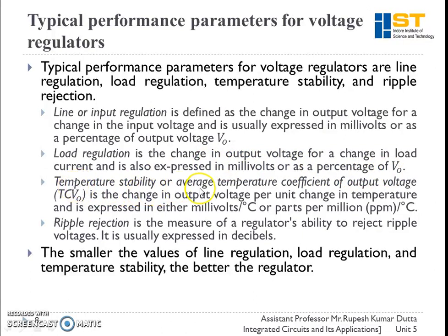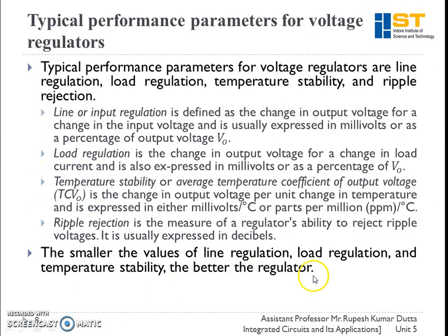Temperature stability, also known as the average temperature coefficient of output voltage (TCVO), is the change of output voltage per unit change in temperature, expressed in millivolts per degree C or parts per million (ppm) per degree C. Ripple rejection is a measure of the regulator's ability to reject ripple voltages and is expressed in decibels. Smaller values of line regulation, load regulation, and temperature stability indicate a better regulator.